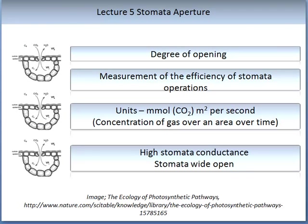The stomata aperture is the degree of opening of the stomata — a measurement of the efficiency of how stomata is opened or closed. It can be used in agricultural contexts to determine how effectively a plant is responding to a particular situation or abiotic stress. Its units are typically measured in carbon dioxide or gas over an area over time — for example, micromoles per metre squared per second, or moles per metre squared per second.